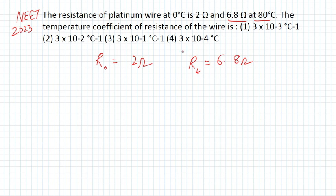We have to find the temperature coefficient of resistance alpha. The formula is: alpha equals RT minus R0, divided by R0 times delta T.